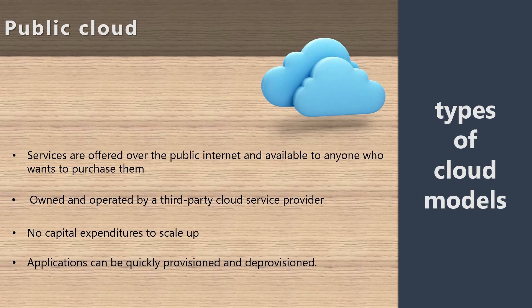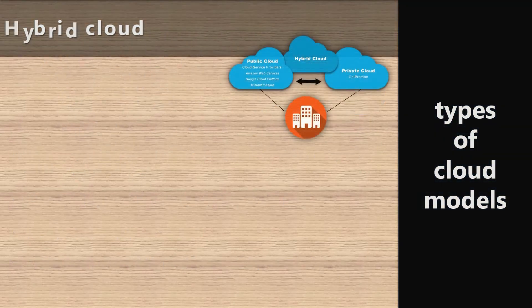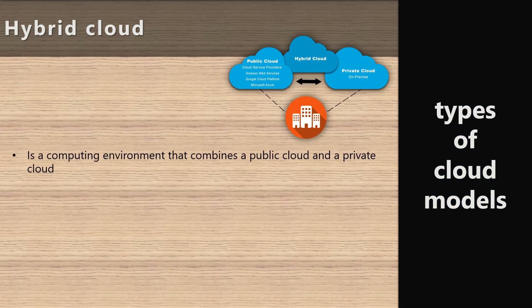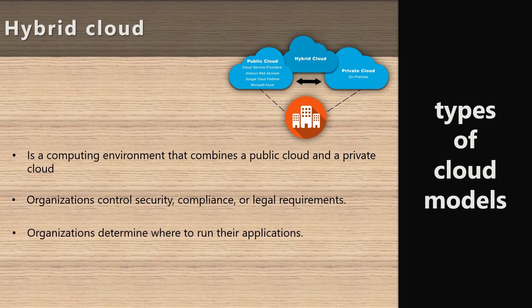The third model is hybrid cloud, which is a combination of public and private cloud computing. You share the responsibility — you take part of it and the public cloud provider takes another part. You decide what services you want from the public cloud and what services you keep on your own premises. It's very flexible because you control what you want from the hybrid cloud.